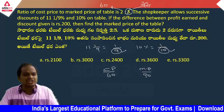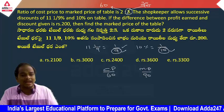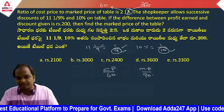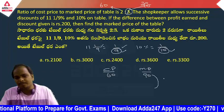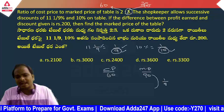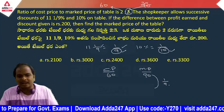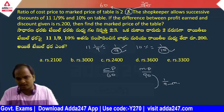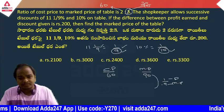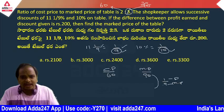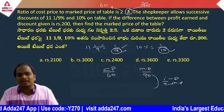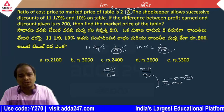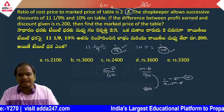First discount is 11 1/9%, which equals 1/9 of market price. Market price is 90. So 1/9th of 90: 9 parts is 90, so 1 part is 10. The discount for the first discount is 10, and the remaining price after the first discount is 80.